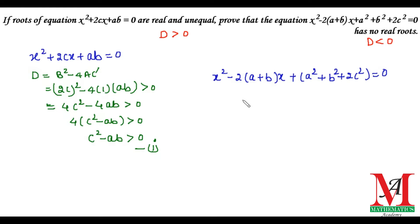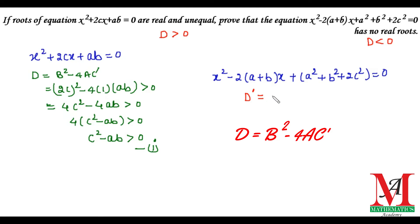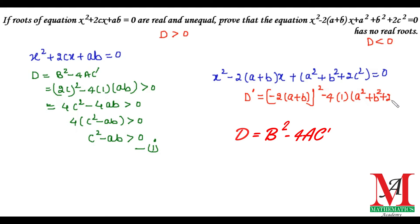We call this discriminant D' since it belongs to a different equation. Putting values directly: D' = [-2(a + b)]² - 4(1)(a² + b² + 2c²), where -2(a + b) is the coefficient of x, 1 is the coefficient of x², and a² + b² + 2c² is the constant term.